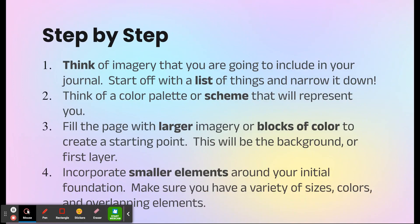When you're working on your visual journal, the first thing you're going to do is think and brainstorm. Think of imagery you're going to include — you can start with a list and narrow it down. Next, think of a color palette or scheme that represents you: do you like things that are bright and neon, more pastels, or neutral colors? Then think about layering — what can fill the page? Larger imagery or blocks of color, starting with paint or collage for your first layer. Then layer smaller elements on top, including your own visual elements, with a variety of sizes, shapes, and colors.